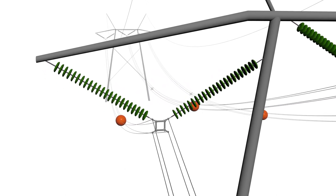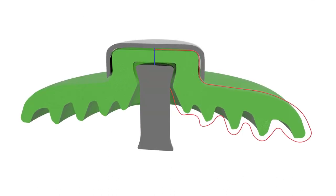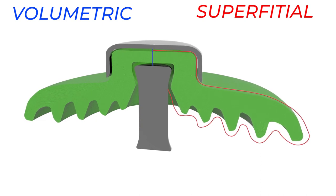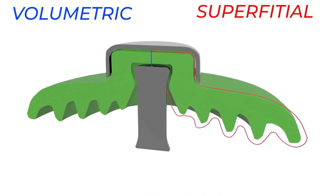There are two types of currents, the volumetric current and the superficial current. The red line shows the superficial current path. Resistance depends on the distance.